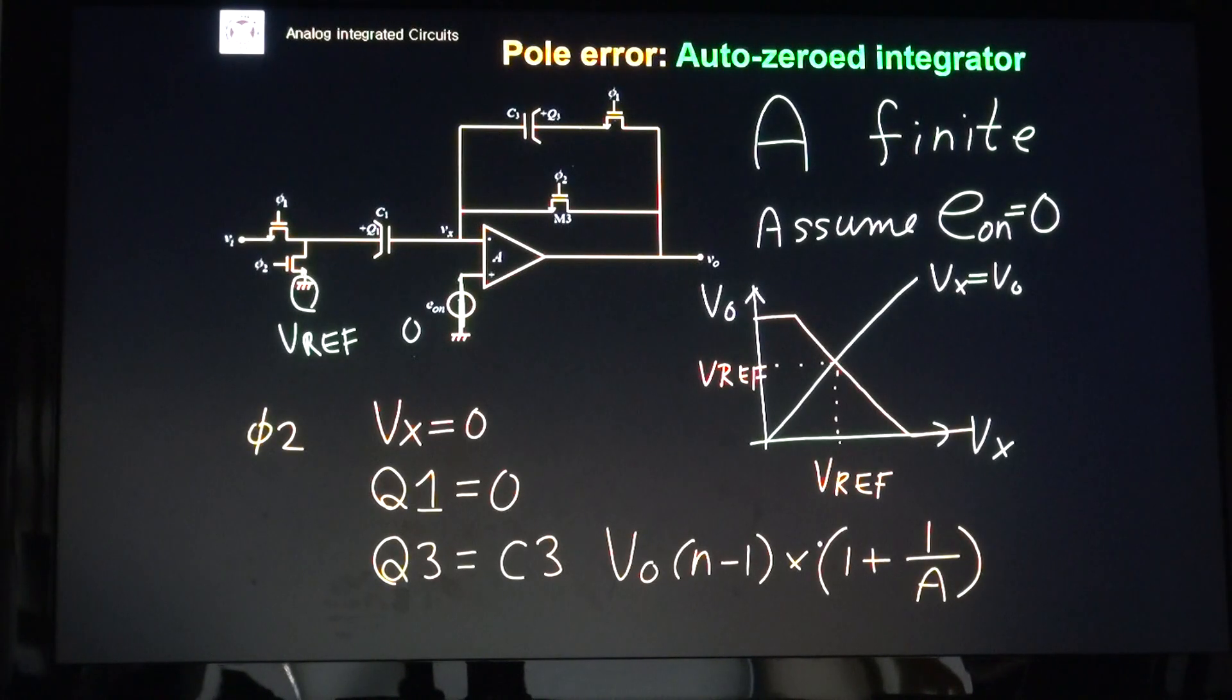How about the finite A? If amp gain A is finite, what happens? During φ2 phase, during φ2 phase, this VREF is zero, actually. Those are VREFs, defined to be zero. The yellow one is amp characteristic. This is an amp characteristic. VO versus VX. This is VX.